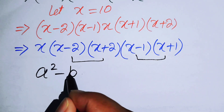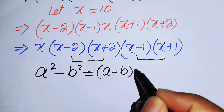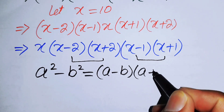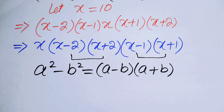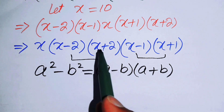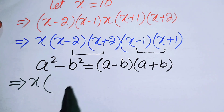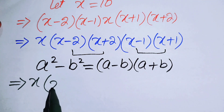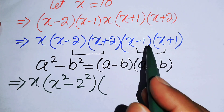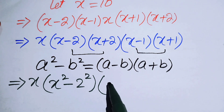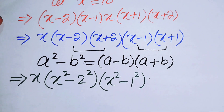The formula is: a squared minus b squared equals (a minus b)(a plus b). Applying this to the first pair: (X minus 2)(X plus 2) equals X squared minus 4. Applying it to the second pair: (X minus 1)(X plus 1) equals X squared minus 1.